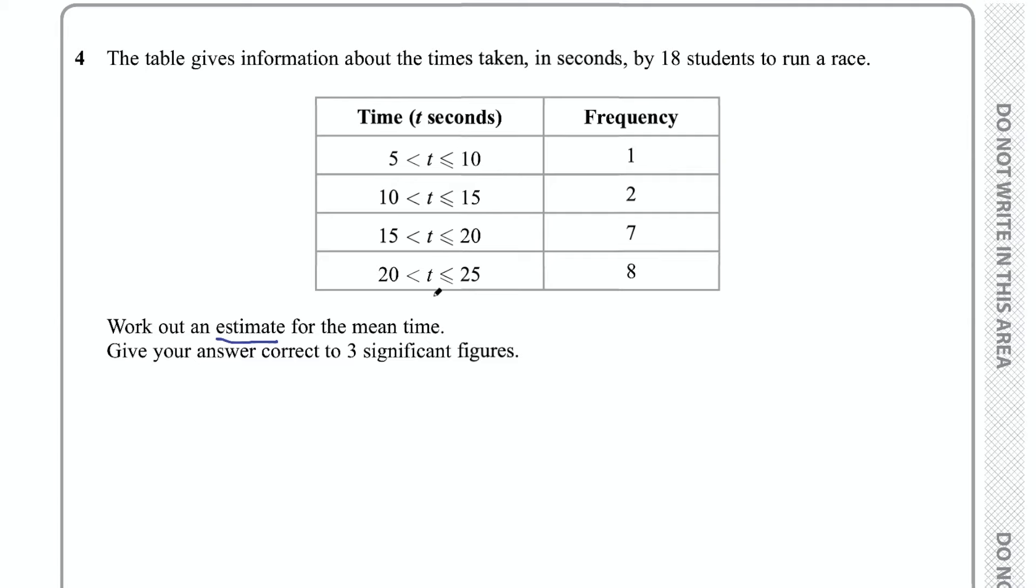The way we do that is we take the midpoints of these ranges and we say that's how long they took. For example, for this first person in this first interval, we estimate that he or she took 7.5 seconds. That's the midpoint of this first range between five and ten. So what we're going to do is add a couple of columns to this table. Let's just draw a straight line and then turn that into a couple of columns. The first one is going to be midpoints.